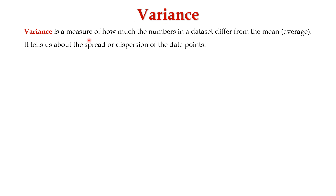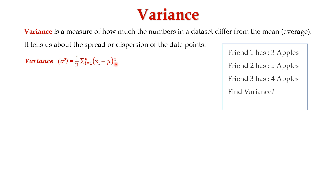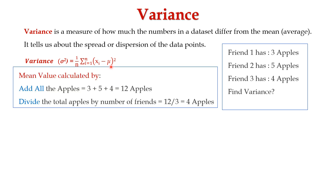Now let's learn about variance. Variance is a measure of how much the numbers in a data set differ from the mean. It tells us about the spread or dispersion of the data points. Variance is represented by the symbol sigma squared. The formula is 1 divided by n, times the summation from i equals 1 to n of (x_i minus mu) squared. Using the same apple example, the mean mu equals 4, and n equals 3.